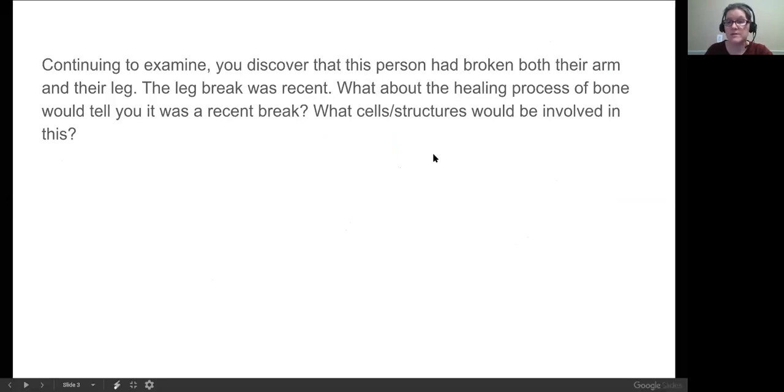Continuing to examine, you discover this person had broken both their arm and their leg. So we're going to talk about what happens when you break a bone and what it does to improve upon that. So it talks first about how the leg break was recent. We've said that bones are actually very active because they have blood vessels running through them to provide nutrients to the active cells. So if you break a bone, you know what else you're going to break along with it? Blood vessels.